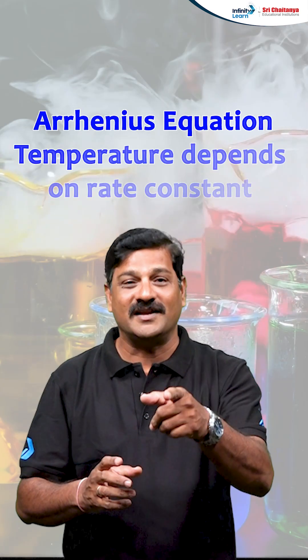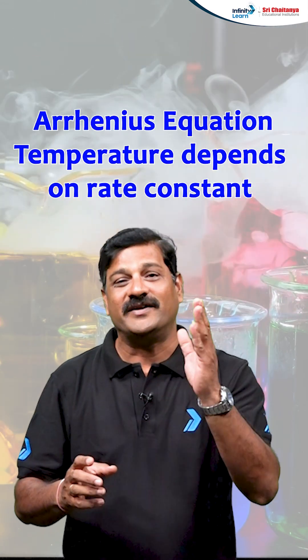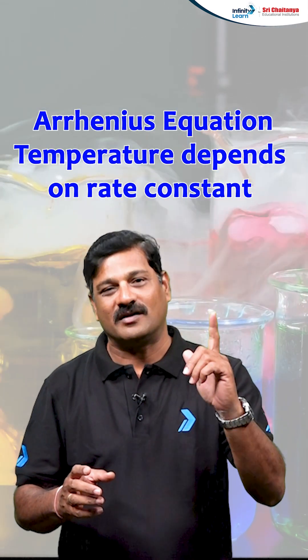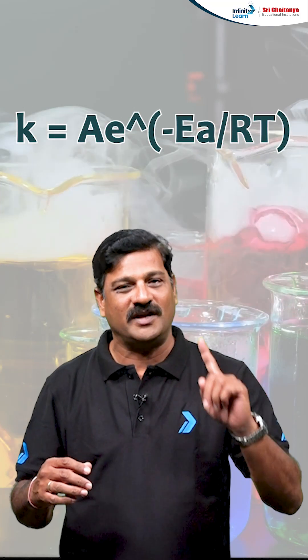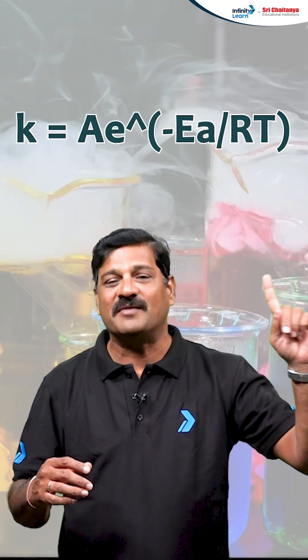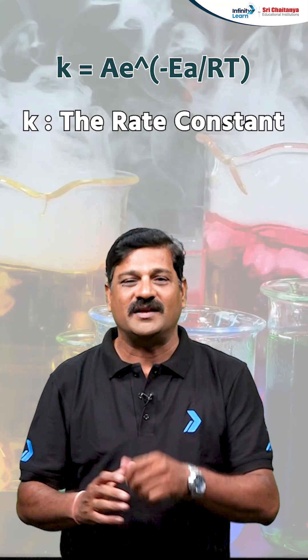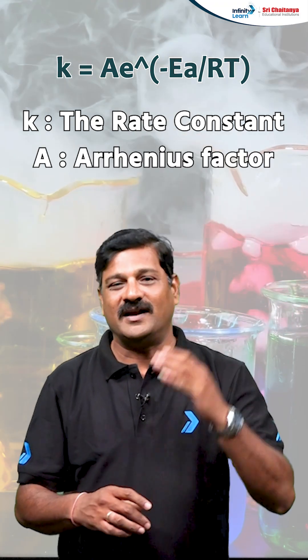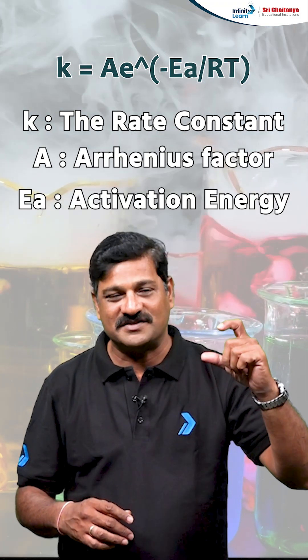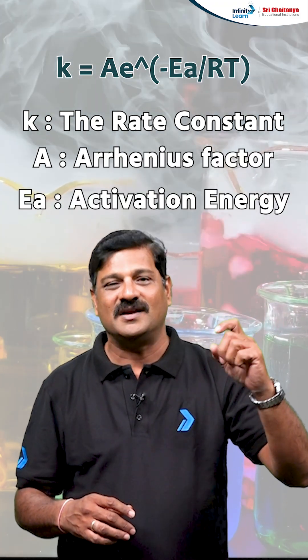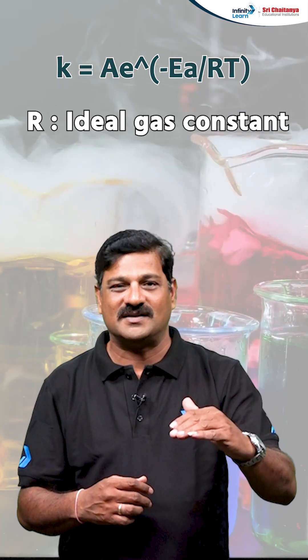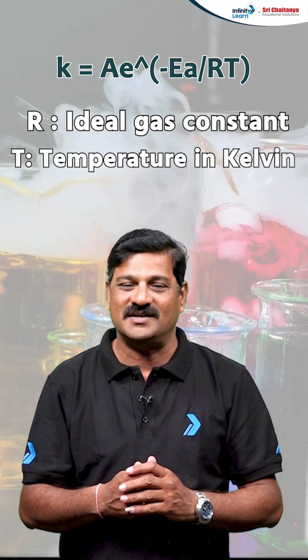Hi students. The most important topic in chemical kinetics is the Arrhenius equation — the temperature dependence on rate constant. It states that k is equal to A times e to the power of minus Ea by RT, where k is the rate constant, A is the Arrhenius factor, Ea is the activation energy, R is the gas constant, and T is the temperature.